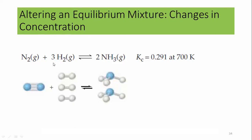Look at this example: the formation of ammonia using nitrogen gas and hydrogen gas as reactants. One molecule of N₂ and three molecules of H₂ form two molecules of NH₃. The equilibrium constant for this reaction is 0.291 at 700 Kelvin.